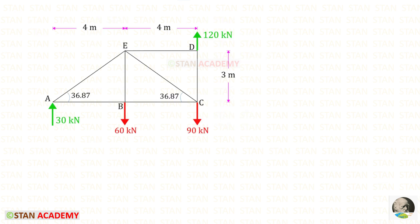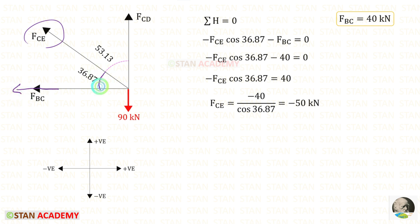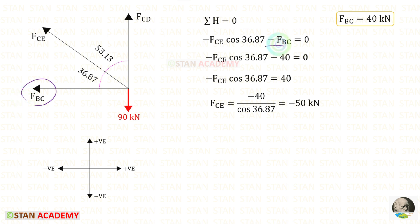Taking joint C, we only need to find F_CE. Using Sigma H = 0, we resolve F_CE horizontally by multiplying cos 36.87°. Since it acts towards the left it is negative, and F_BC also acts towards the left so it is negative. Applying the value of F_BC, for F_CE we get −50 kN.